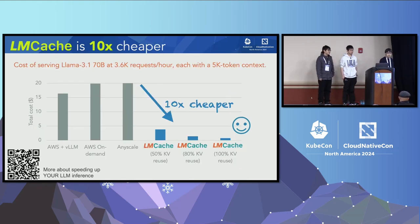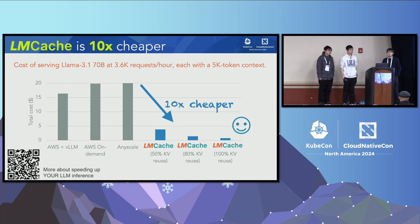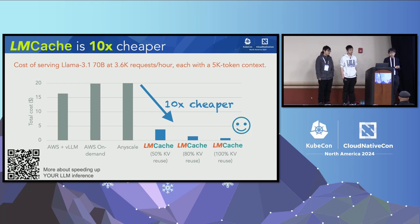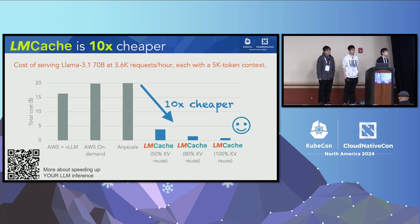Not just serving LRM inference faster — LMCache can also reduce cost. Compared to AWS on-demand service or similar popular services, if you want to achieve the same serving throughput on the same model, the cost can be 5 to 10x cheaper depending on the characteristics of the workload.